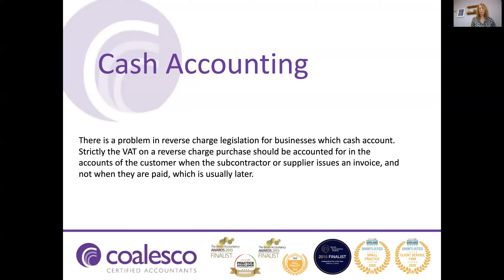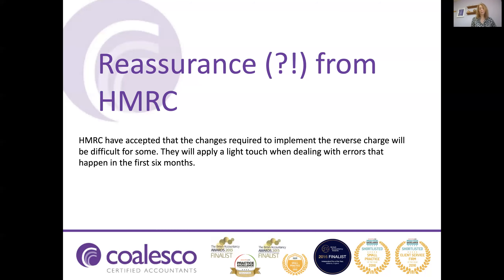These are significant changes within the construction industry. There is reassurance from HMRC that they will accept errors and will apply a light touch when dealing with errors for the first six-month period, whilst businesses are becoming compliant. However, you do have to act in good faith — if you make a mistake, it must be corrected under normal VAT correction methods, and HMRC are saying that no penalties will be charged.